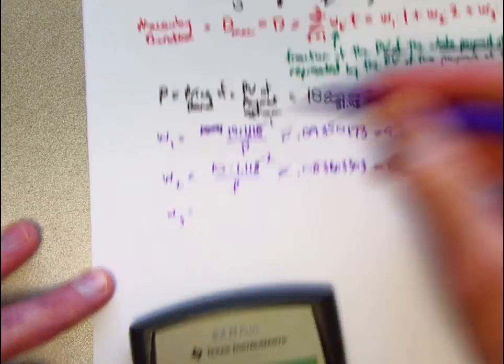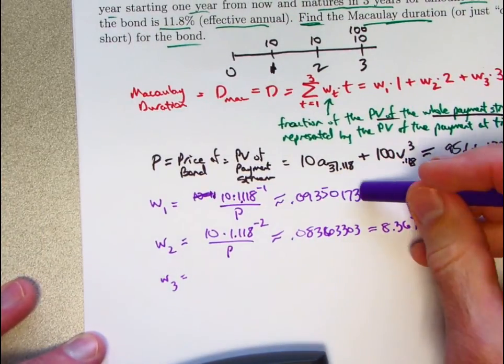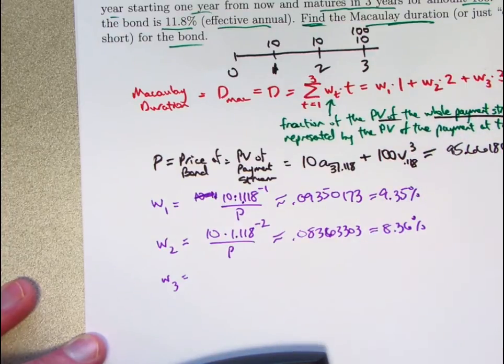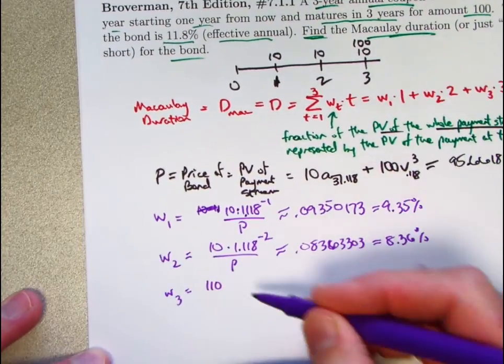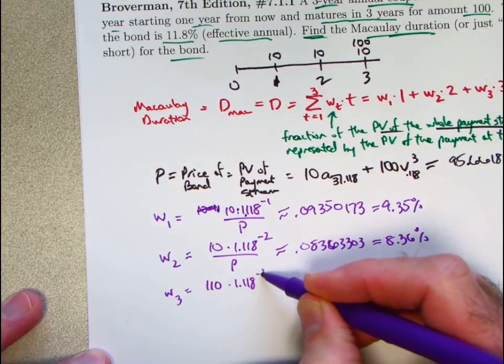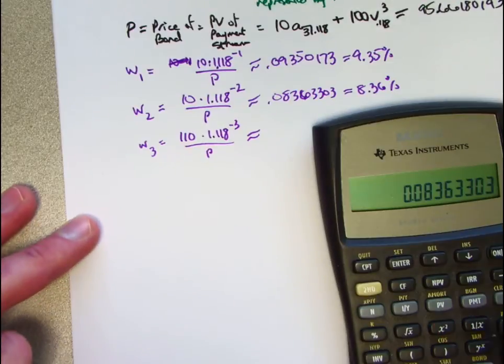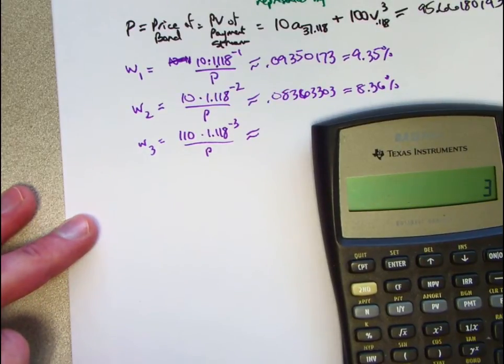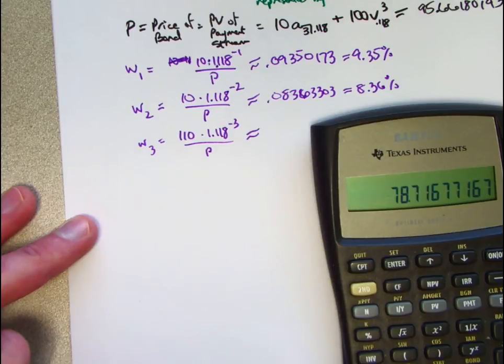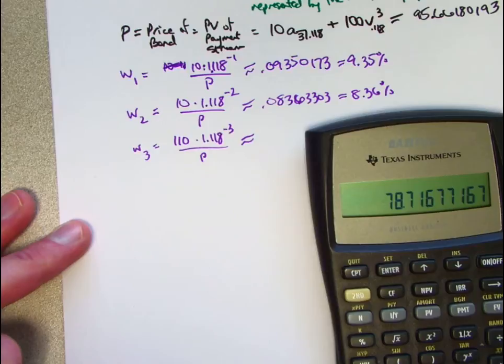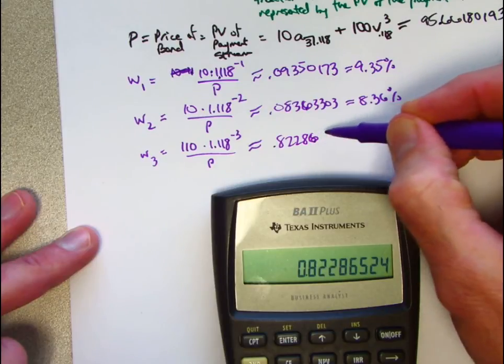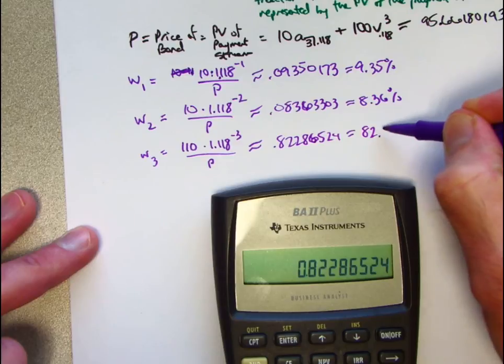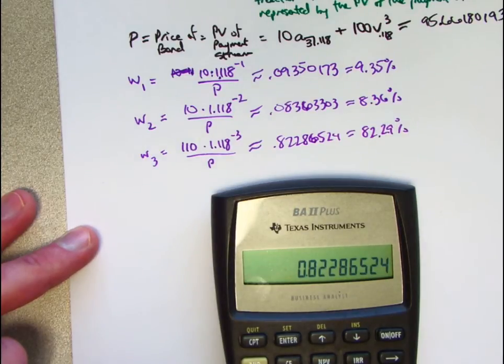W3 can be calculated in the same way now using 110. I also could calculate W3 by, think about it, adding these two numbers and subtracting from 1. These have to add up to 1 or 100%. But let's go ahead and calculate it as 110, 10 plus 100, times 1.118 to the negative 3 power. Divide by P. 1.118 to the negative 3 power is this, times not 100, careful, times 110. Get this. Now divide by P. What's in register 0? This comes out to about 0.82286524, approximately 82.29%. I will store that in register 3.